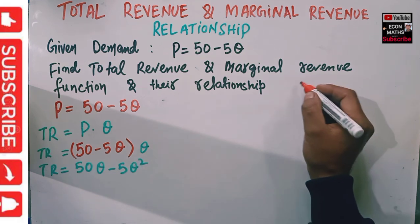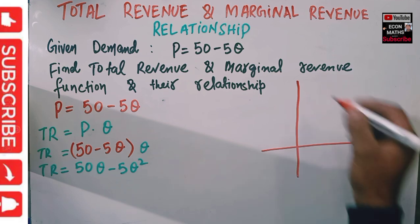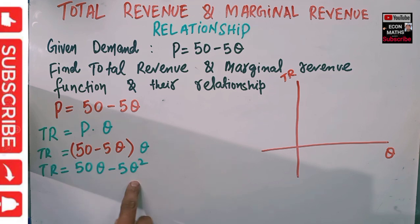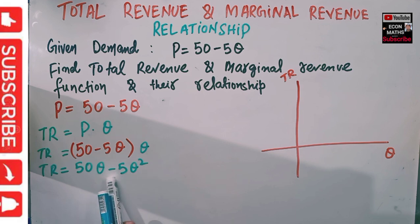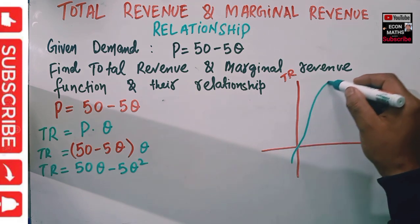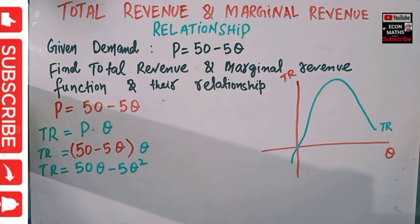On a graph it looks like this. If we have quantity on one axis and total revenue on the other, since it is a quadratic function with the coefficient of Q² being negative, the total revenue curve will be an inverted U-shape. This is our total revenue function.